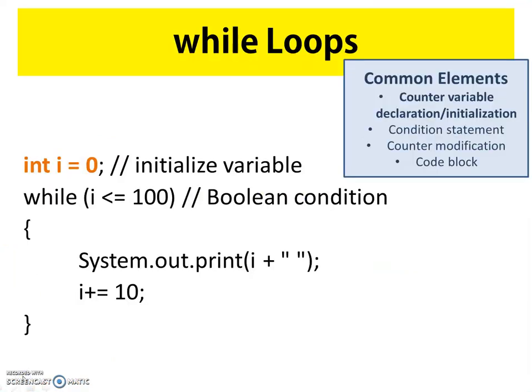Before we work through each of the common elements of a while loop, I want you to just take a look and notice how the structure of the while loop differs from the for loop. Remember I told you the for loop was really clean looking. The while loop is still kind of clean looking, but it's not quite as clean as the for loop.